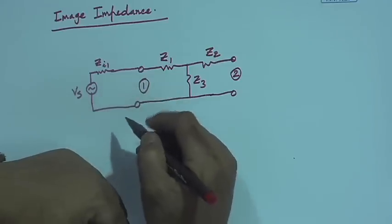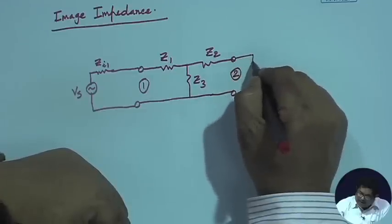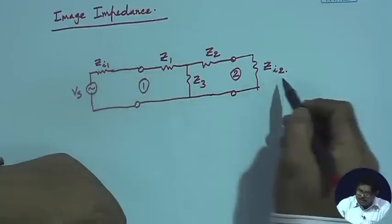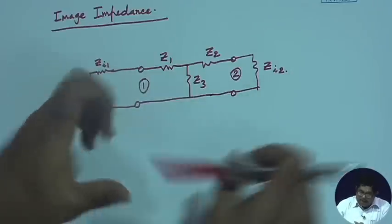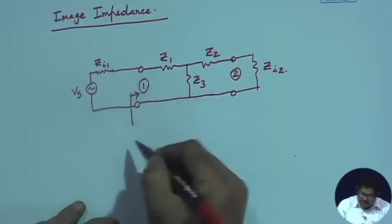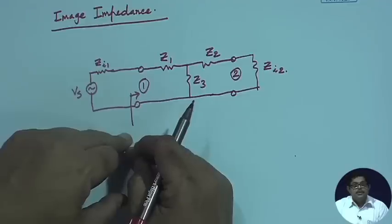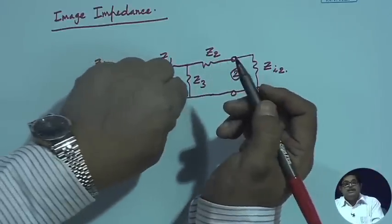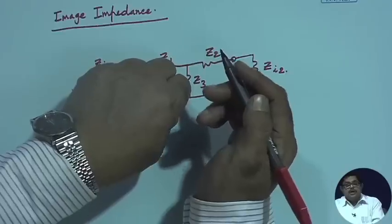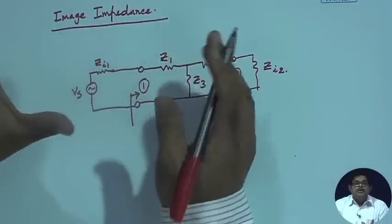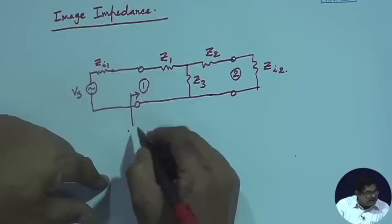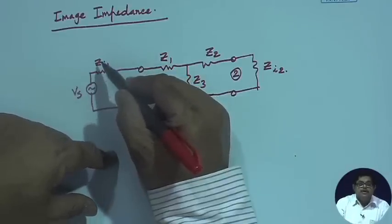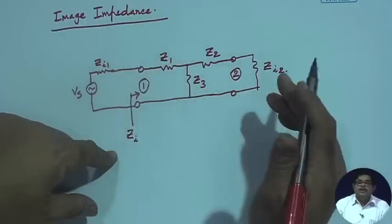Suppose I terminate the network with some load impedance — let that load impedance be called Z_i2, and the source impedance Z_i1. The idea of image impedance is that at this point, if I look in, I will get some impedance. If this impedance is equal to Z_i1, then from the source I can have maximum power transfer. According to maximum power transfer, if Z_in is the complex conjugate of Z_i1 star, then maximum power transfer takes place.